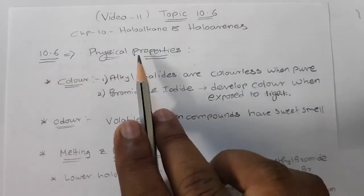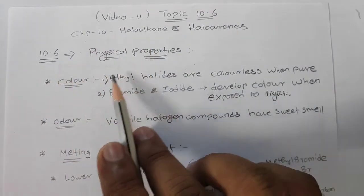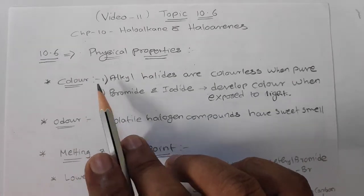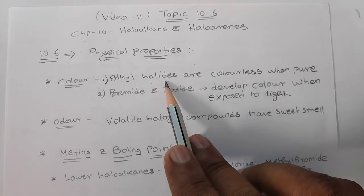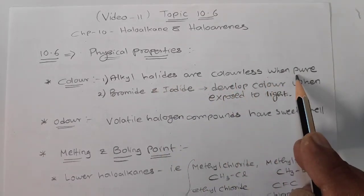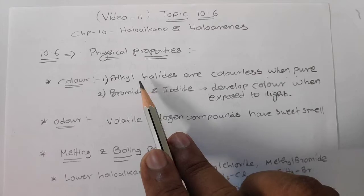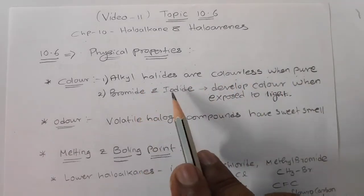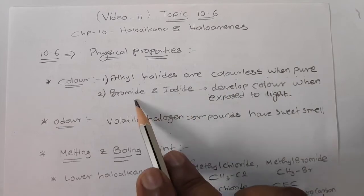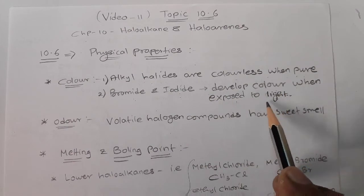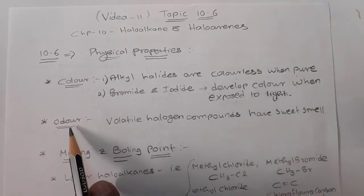In topic 10.6 we are going to discuss physical properties, starting with color. Alkyl halides are colorless when they are in pure form, but bromides and iodides — that is, alkyl halides containing bromide and iodide — develop color when exposed to light. They are what we call photoactive chemicals.